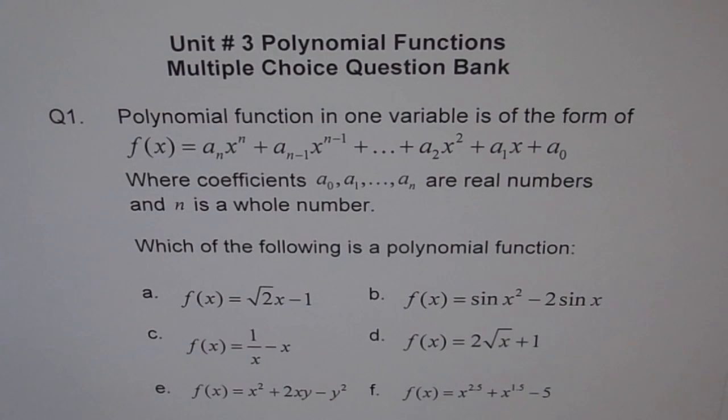Option c: f(x) = 1/x. Here, x is to the power of -1. Remember, n is a whole number, so n cannot be -1. Option d: f(x) = 2√x. Here, what is the degree of x? One-half, which is not a whole number.